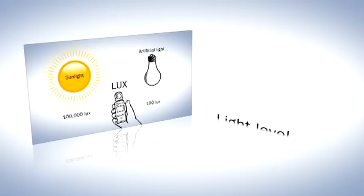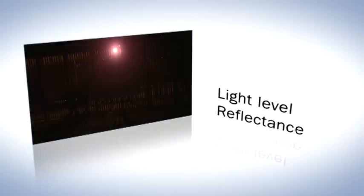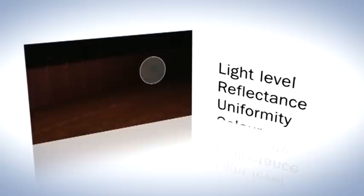To recap, when you're producing an operational requirement, there are a number of factors concerning illumination that you need to bear in mind: the light level required, the reflectance of the intended subject, the uniformity of the light across the scene, and the colour requirements.